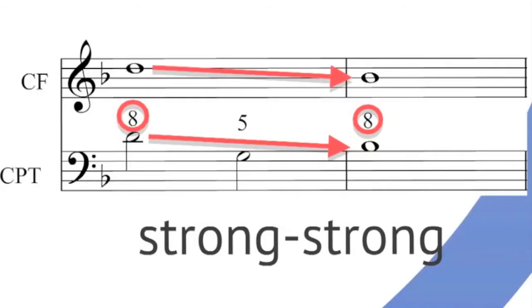Parallel perfect intervals are also not permitted from a strong beat to a strong beat. So that's from the downbeat of one bar to the downbeat of the following bar, you may not have consecutive perfect octaves or fifths.